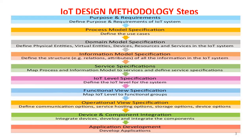The sixth step is the IoT level specification. You have an idea about the different levels from unit one, where I explained six different levels: level one, level two, level three, level four, level five, and level six.